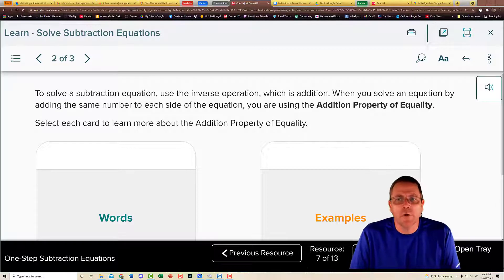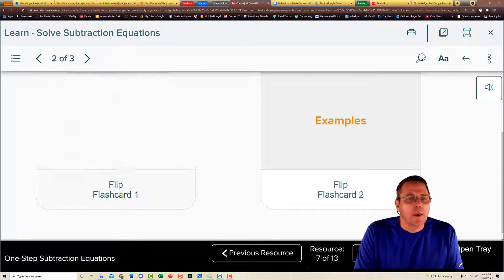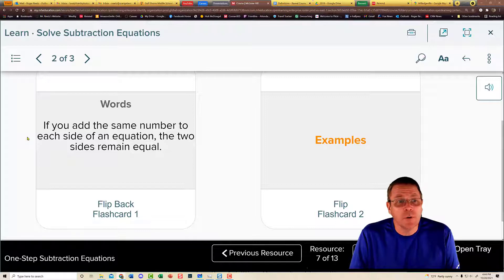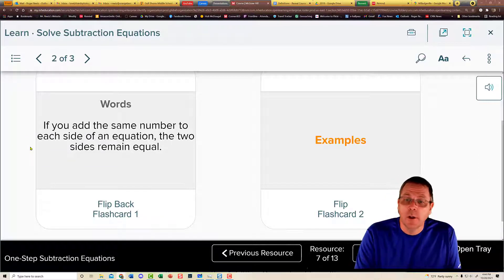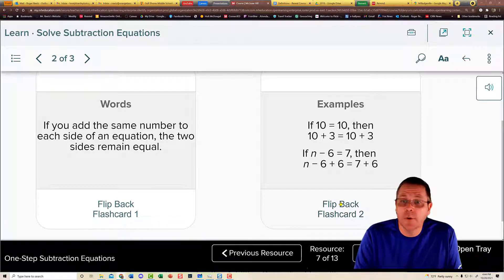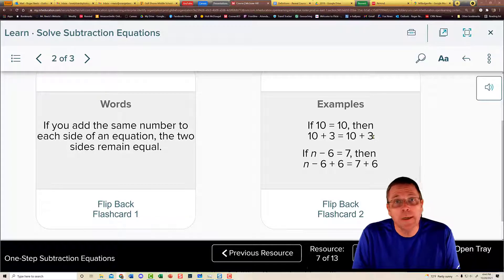Now we're going to learn how to do it algebraically using the addition property of equality. In words, it says, if you add the same number to each side of an equation, the two sides are going to remain equal. We can look at that using numbers to say, if 10 equals 10, and you added 3 to both sides here and here, well, then you'd get 13 on both sides. It stays equal.